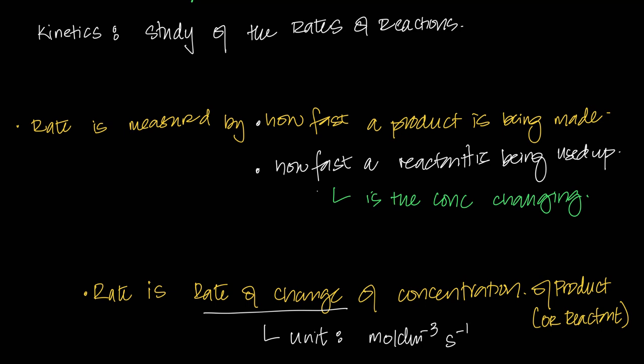For those taking A-level maths, this is basically differentiation — the instantaneous rate of change of concentration, or d[concentration]/dt. For those who haven't done that, it's simply the rate of change of concentration in mol/dm³/s. The change in concentration of product is positive and of reactant is negative, but we only talk about magnitude, so either measurement gives the same result.